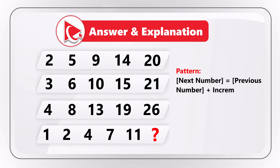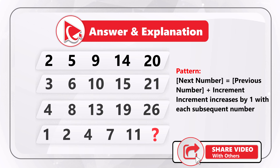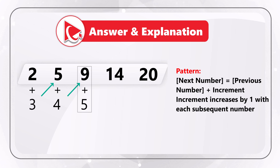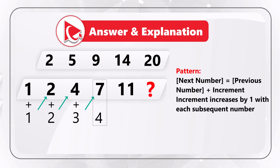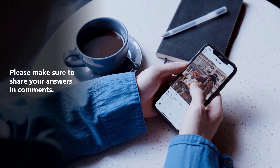For the last row: 1 plus 1 equals 2, then increment increases by 1, so 2 plus 2 equals 4, 4 plus 3 equals 7, 7 plus 4 equals 11, and last, 11 plus 5 equals 16. So the correct answer here is Choice B, 16. If you have a better way to solve it, please post in comments so we can all learn.